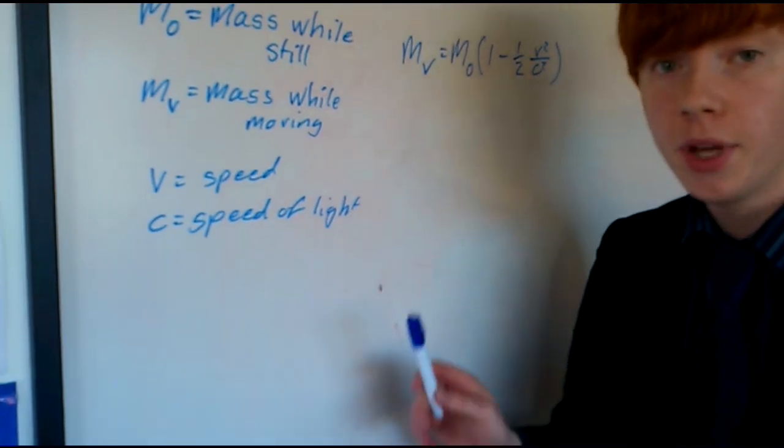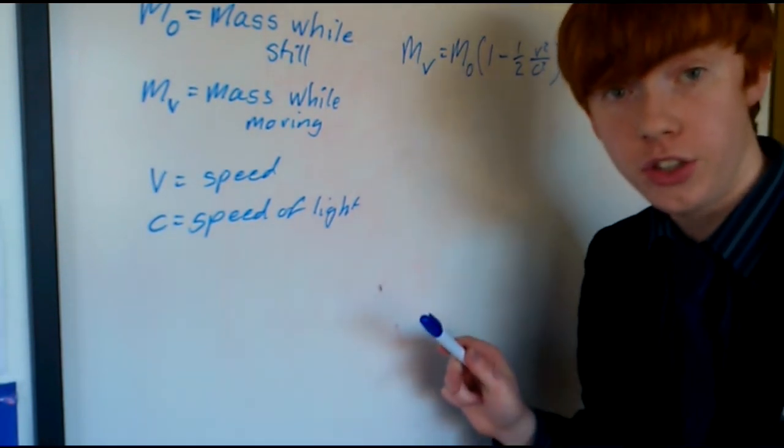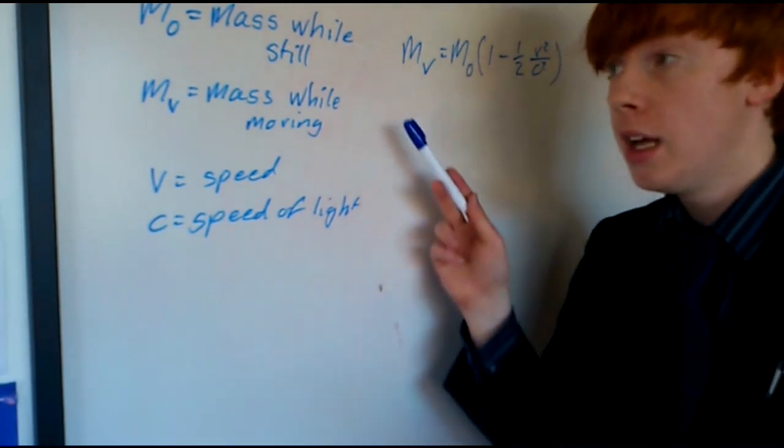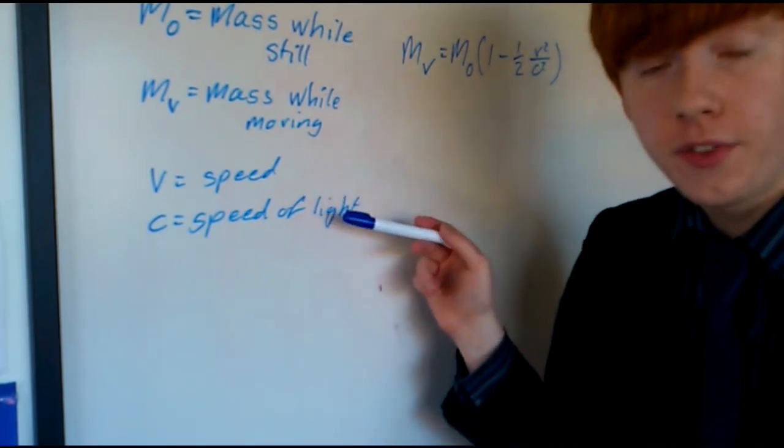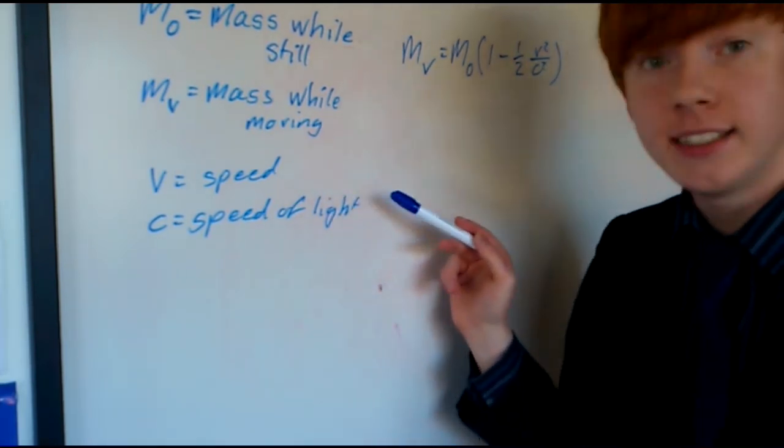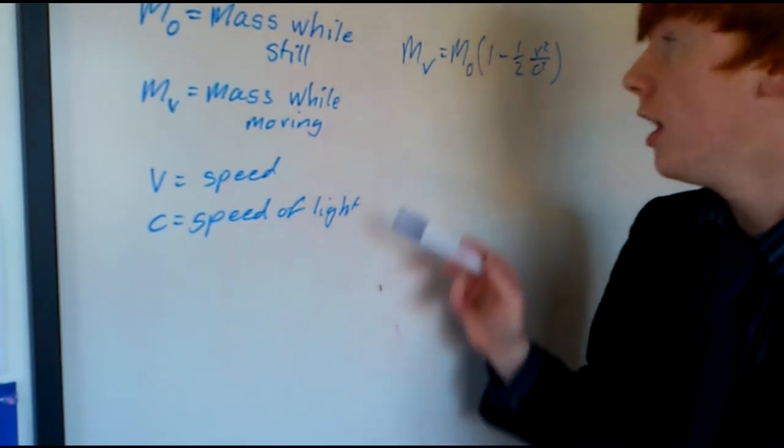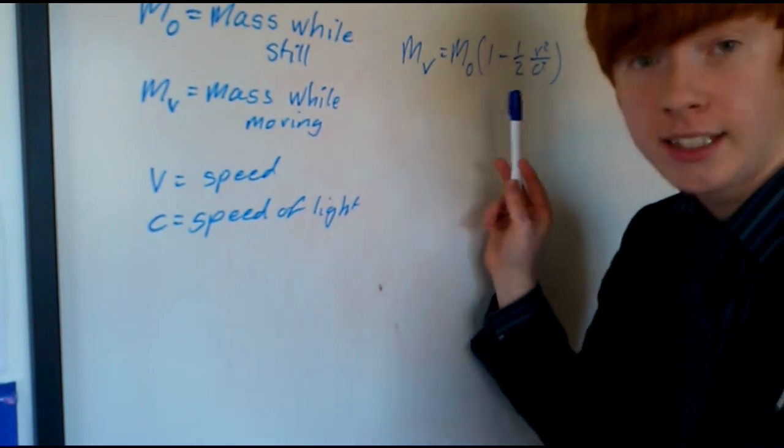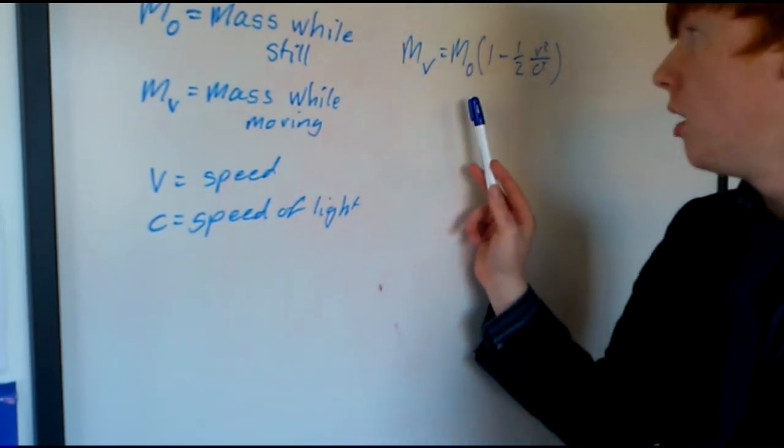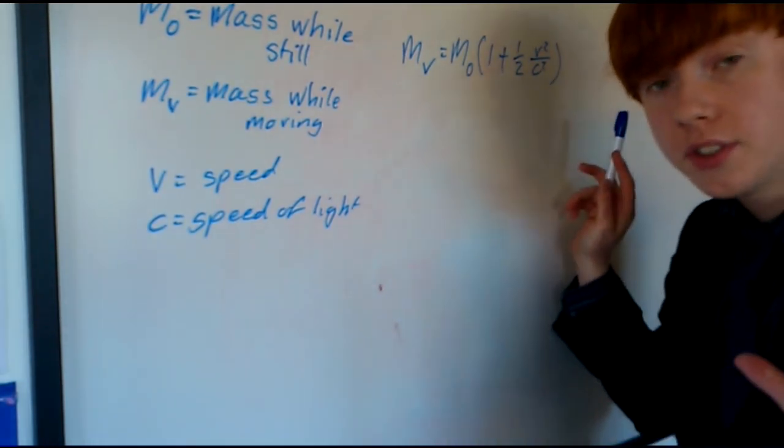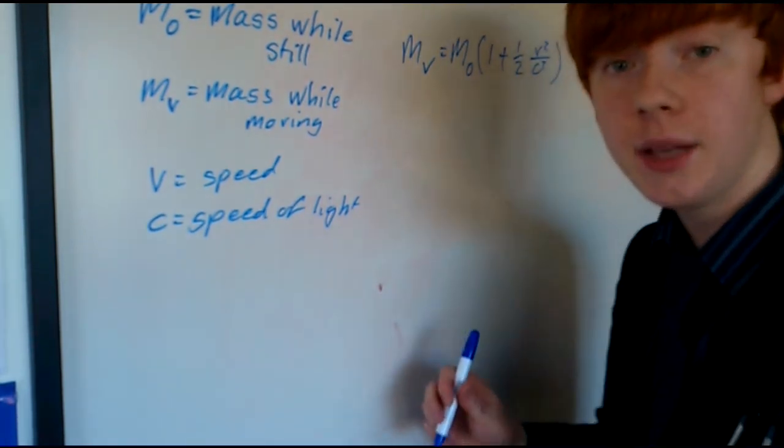Now, just to recap, what we have is m0 is the mass of you while you're just sat there, mv is the mass of you while you're moving, v being the speed, and c is the speed of light. And what we've managed to simplify it down to so far is the mass of you moving is approximately the same as the mass of you while you're still, multiplied by one plus half of your speed squared divided by the speed of light squared.